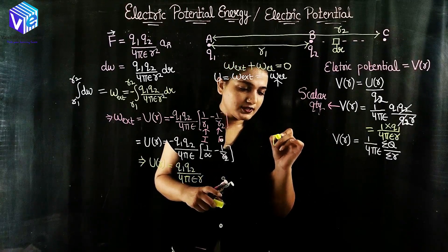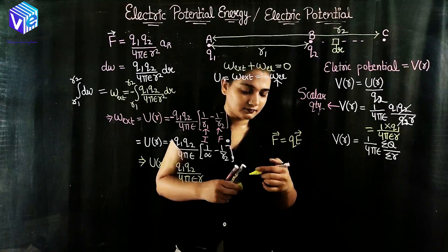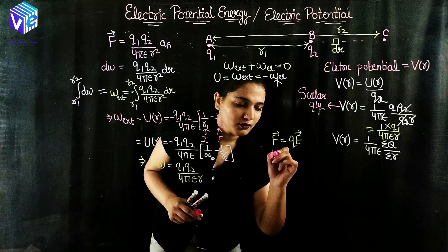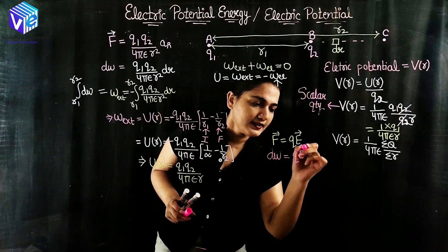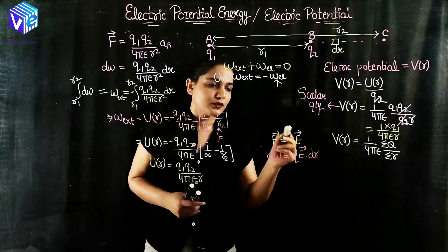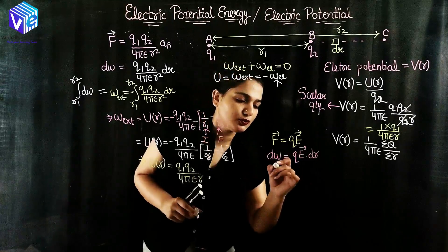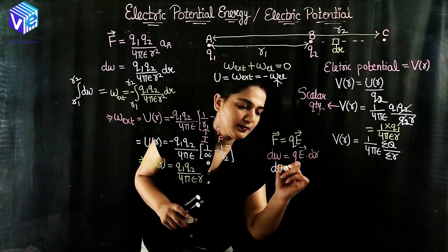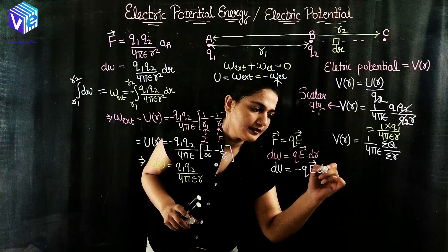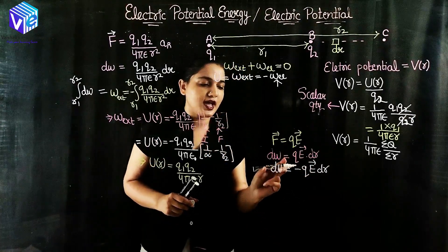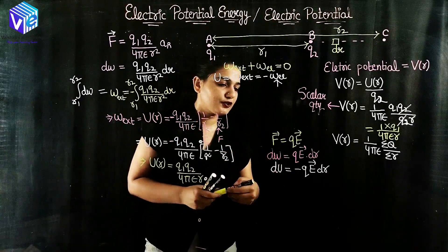We know that force equals qE, so dW equals qE·dr. Also, dU equals the negative of dW, so dU equals negative of qE·dr. The external force is the negative of the electric force, so dU equals −qE·dr.